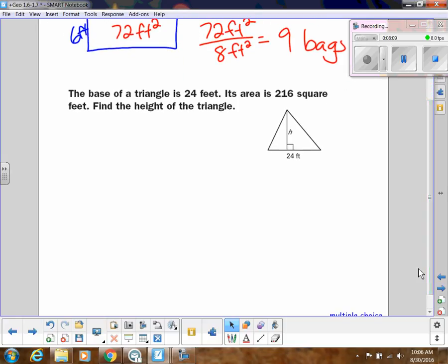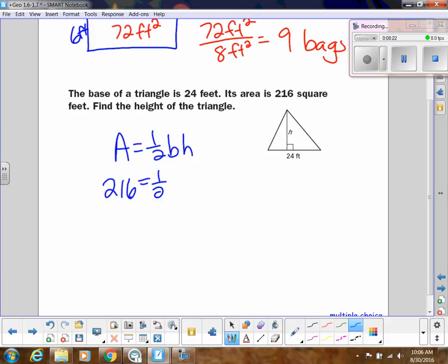All right, so here we have the base of the triangle is 24 feet, and its area is 216. They want us to find the height. Keep in mind that all you're doing is working backwards. They give you the area now, and the base, we're trying to find the height. So don't let that fool you. You don't have to do anything crazy. You're just solving an equation, but now you're solving it for a different variable.